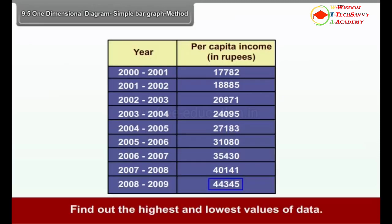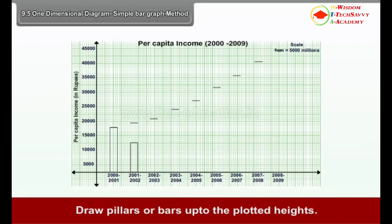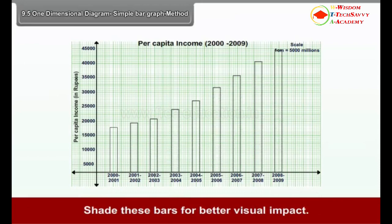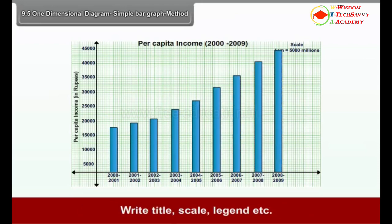Method for drawing a bar graph: Find out the highest and lowest values of data. Accordingly, select a scale. Plot the points that will determine the height of bars. Draw pillars or bars up to the plotted heights and shade them for better visual impact. Write the title, scale, legend, etc.